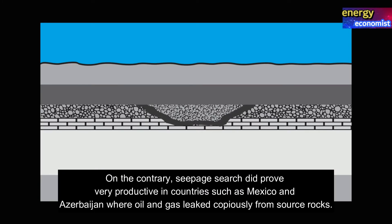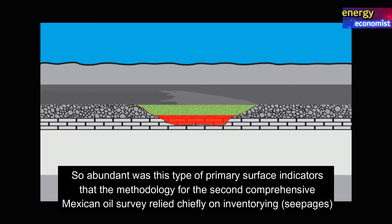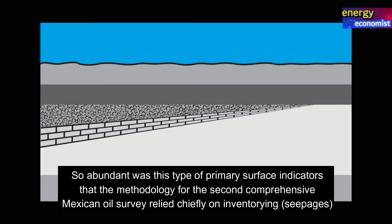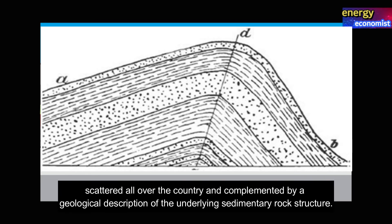On the contrary, seepage search did prove very productive in countries such as Mexico and Azerbaijan, where oil and gas leaked copiously from source rocks. So abundant was this type of primary surface indicator that the methodology for the second comprehensive Mexican oil survey relied chiefly on inventorying seepages scattered all over the country, complemented by a geological description of the underlying sedimentary rock structure.